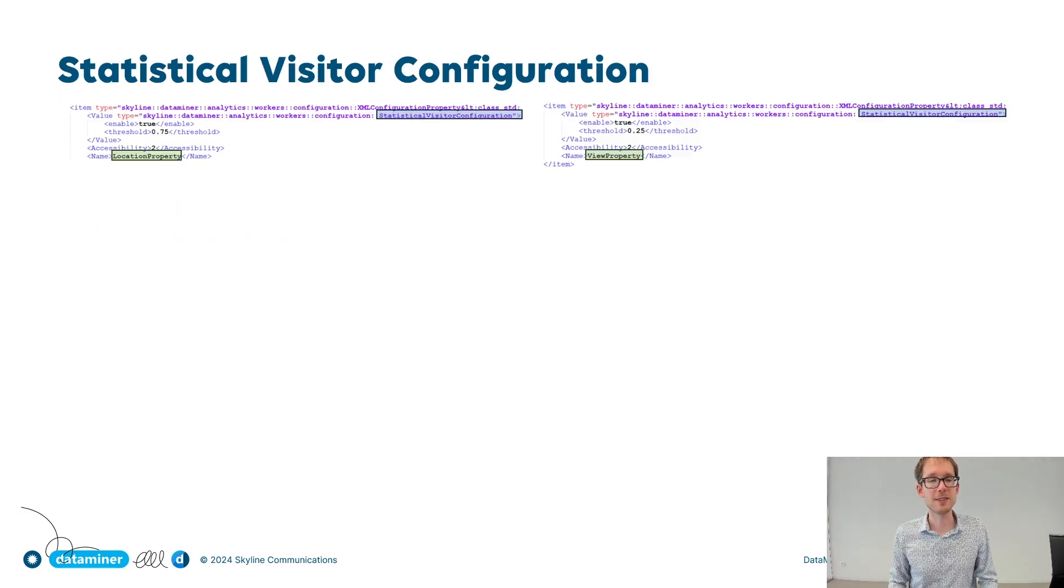Without further ado, let's go into some details. The configuration settings for statistical grouping can be found in the hidden configuration file. You have it in the Skyline DataMiner Analytics folder, and it's called config.xml. Now, if you open up that XML, you will find two occurrences of a statistical visitor configuration. One is related to grouping based on the location of devices. The second one is related to grouping on the view structure in your surveyor tree.